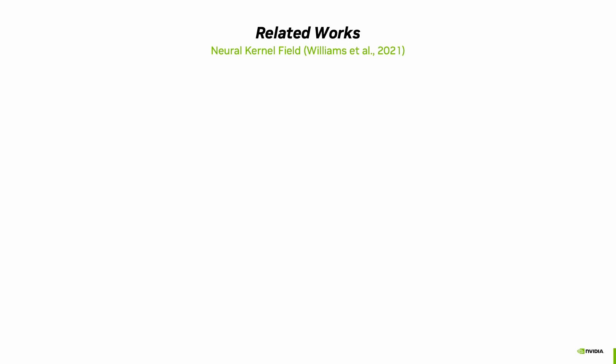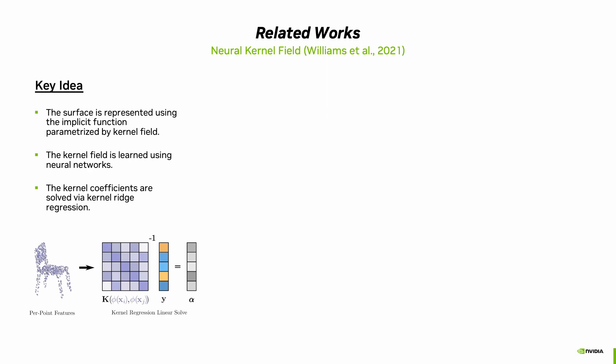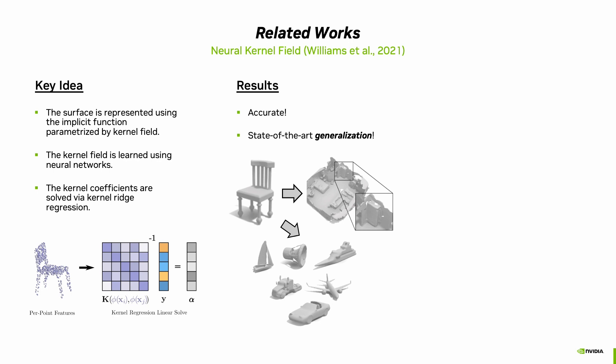Let's take a closer look at the key idea behind neural kernel field and the main problem it faces. As we discussed earlier, NKF elegantly combines data-driven smooth interpolation priors with an accurate surface fitting solver. In NKF, the surface is represented using an implicit function that is parameterized by the kernel field. The kernel field itself is learned using neural networks, while the kernel's coefficients are solved via kernel ridge regression. This approach provides accurate fitting results as well as state-of-the-art generalization.